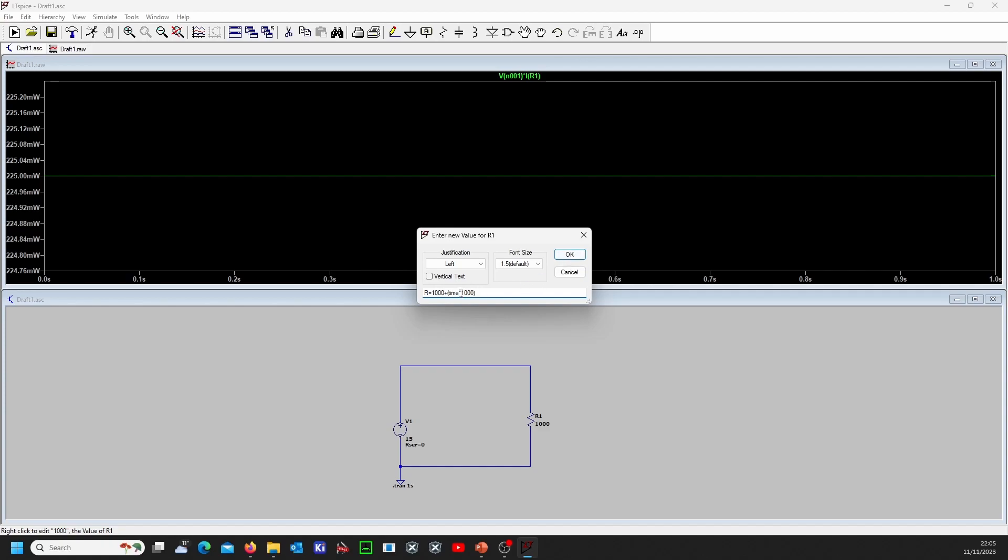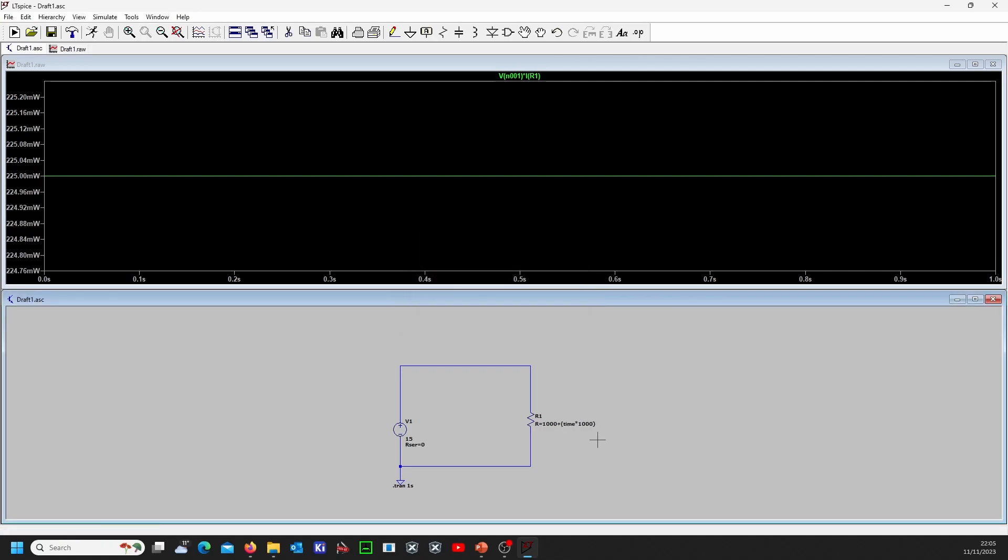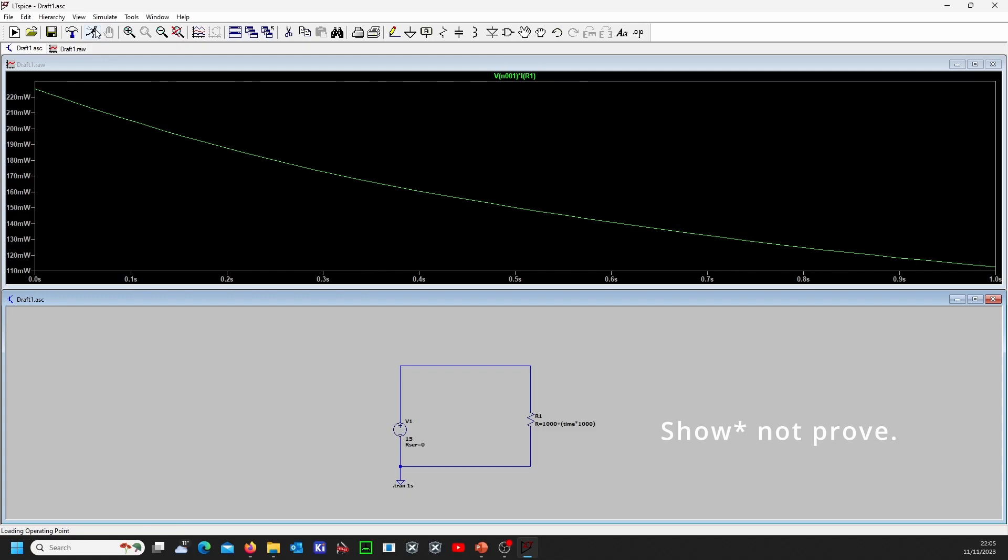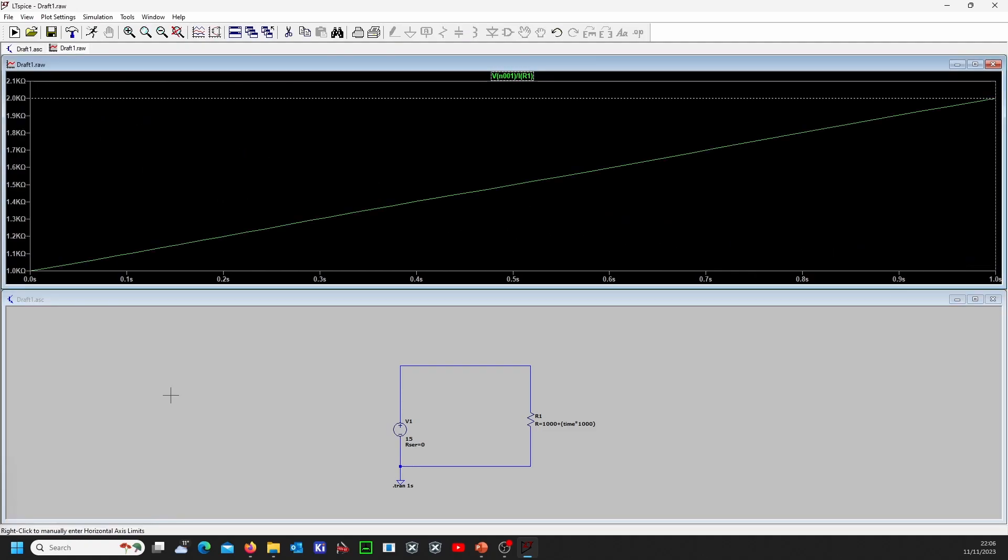This is just to show how the power dissipation across the resistor changes as you increase the resistance. This will hopefully prove that the worst case power dissipation is when we have the minimum resistance of one kilo ohms. You can see as the resistance is increased the power dissipation goes down.